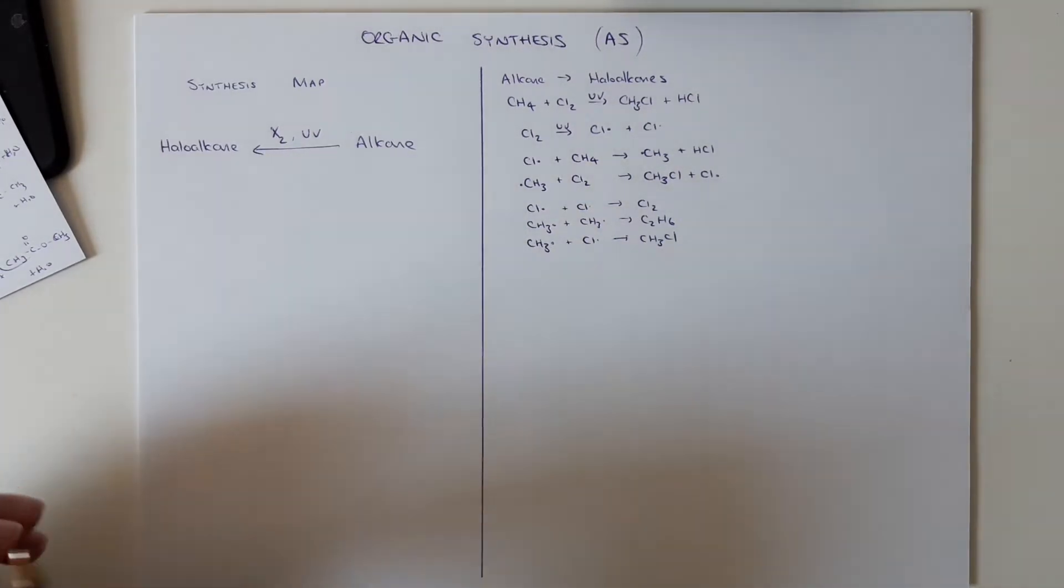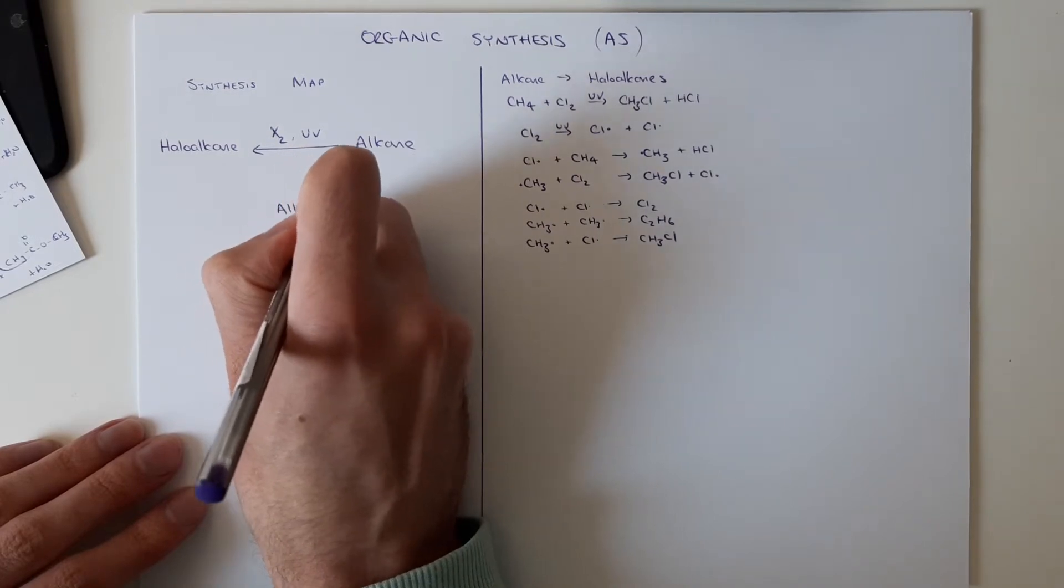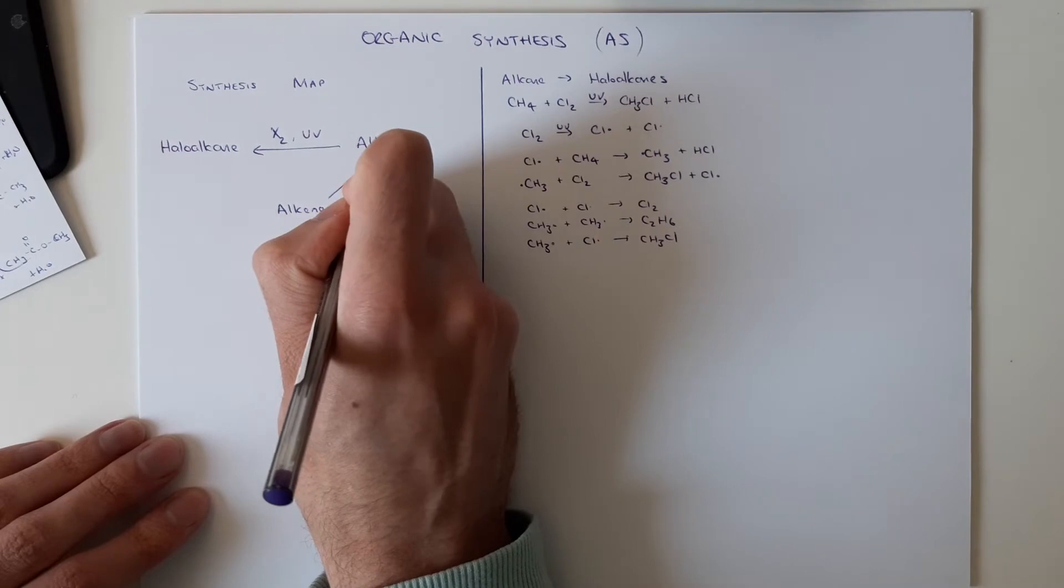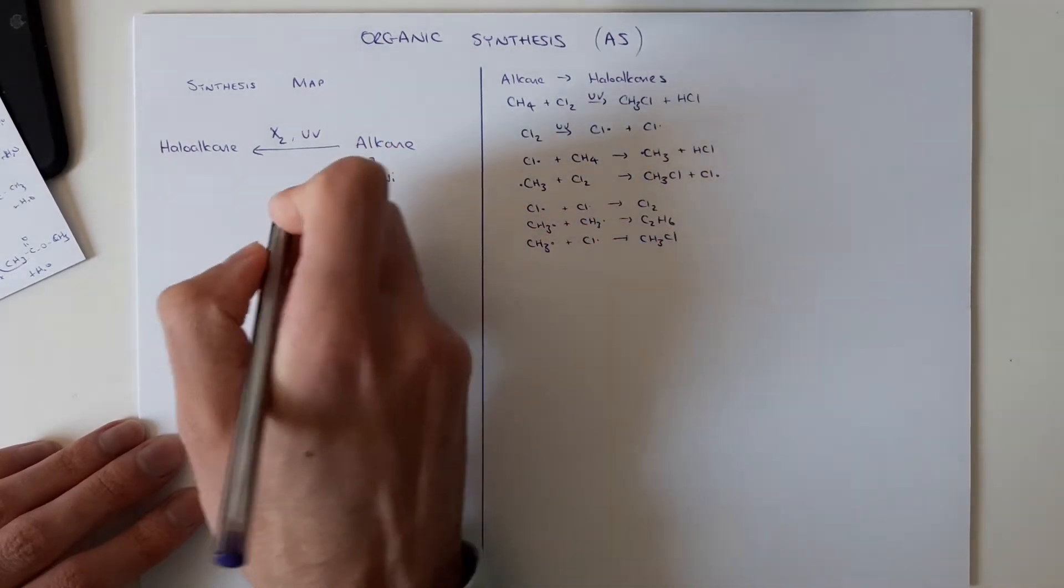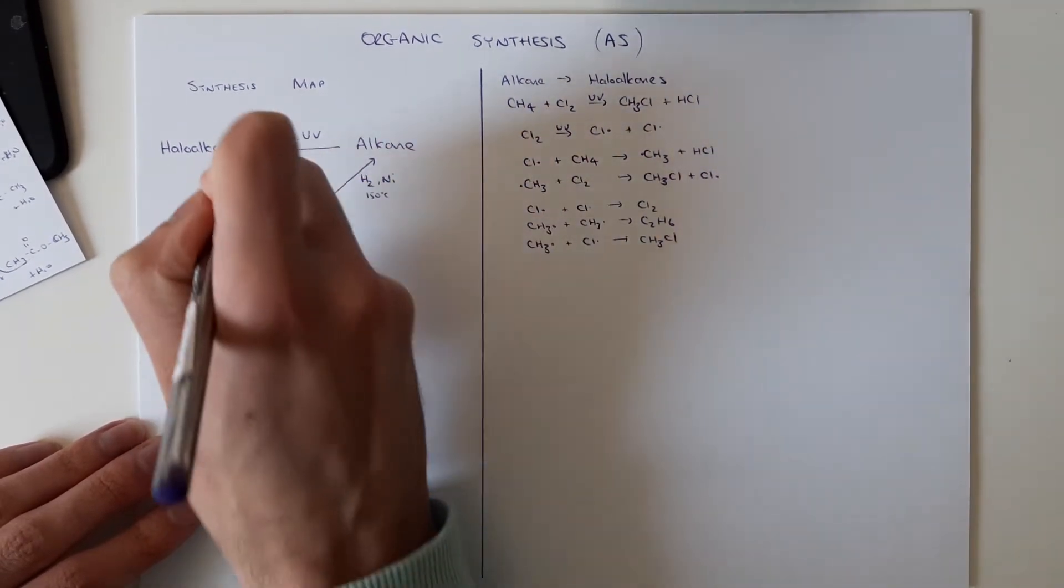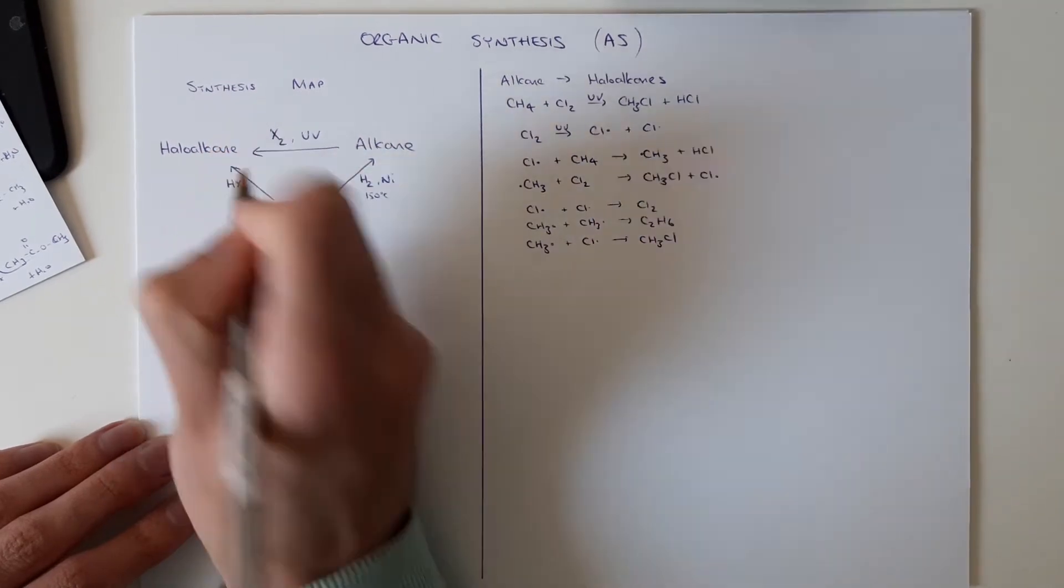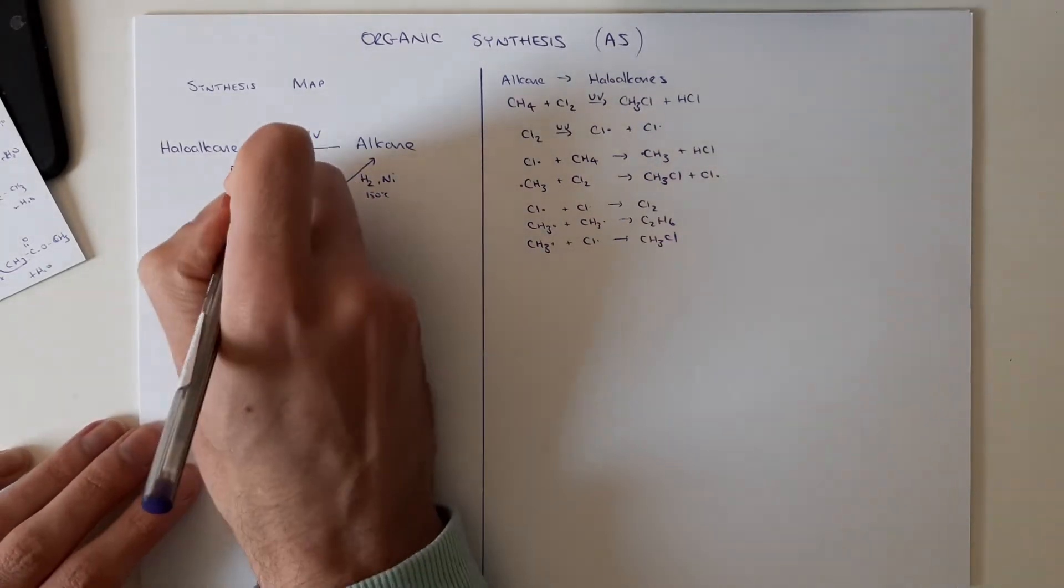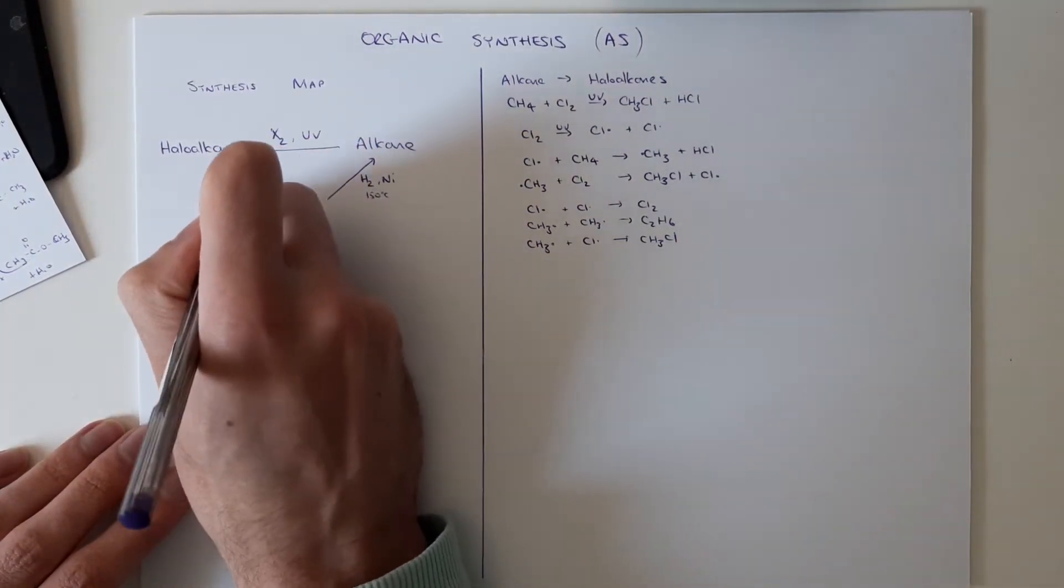Next up we're going to bring in our alkenes, so lots of reactions of our alkenes and we need to know the mechanisms for them. We can go to alkanes if we have H2, nickel catalyst and a bit of heat and pressure. We can go to haloalkanes if we have our halogen attached to hydrogen or we can get a dihaloalkane if we do it with X2.